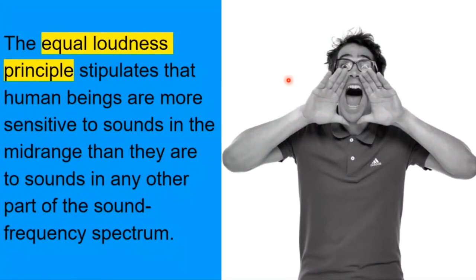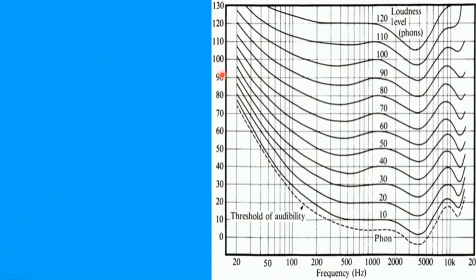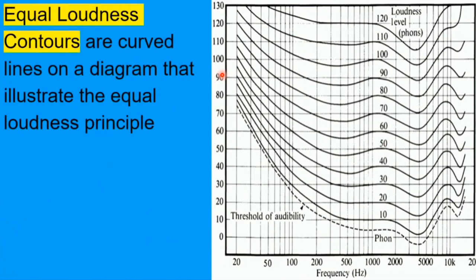Next, we'll talk about the equal loudness principle. This is an important one for music technologists and mixing. The equal loudness principle stipulates that human beings are more sensitive to sounds in the mid-range than they are to sounds in any other part of the sound frequency spectrum. That means that the sounds from 320 to 2560, that is where we are most sensitive. And what that means in practice is that we actually hear sounds in that range as if they were louder, which is strange.